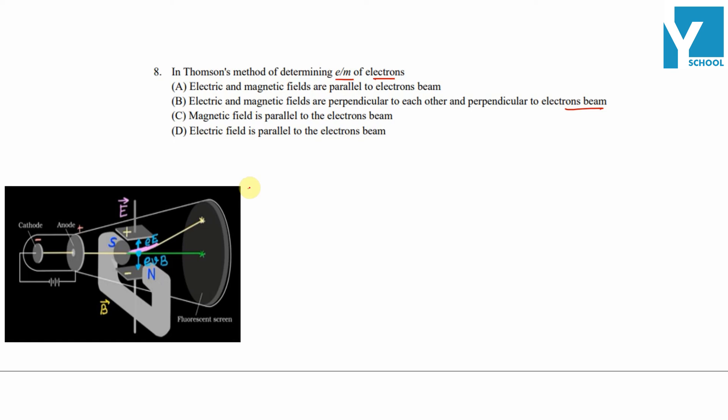We have studied this setup for the experiment. From the setup, we know the electric field is pointed in this direction, from plus to negative, and the magnetic field is from north to side, and the electron beam is here.